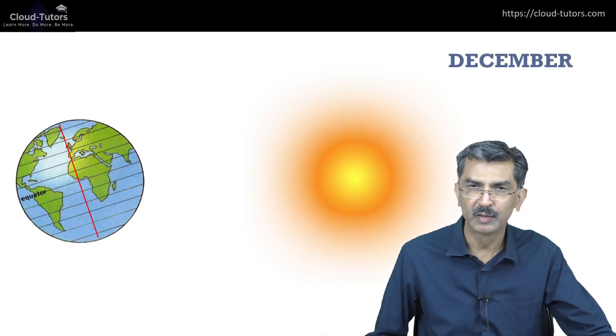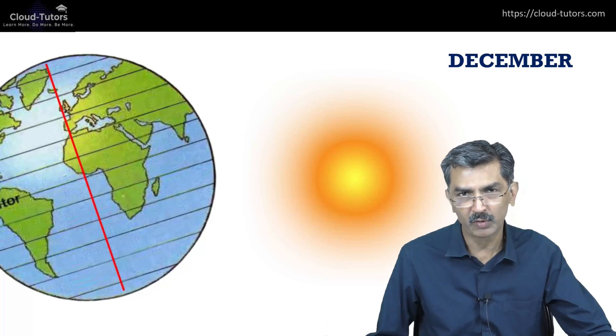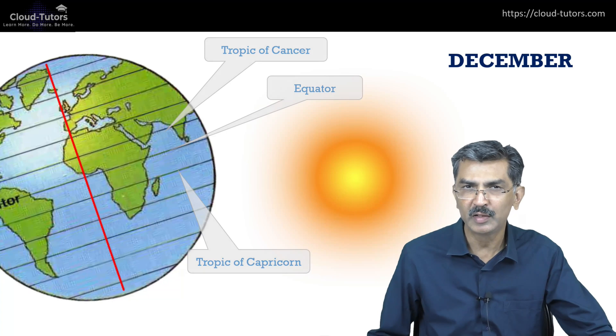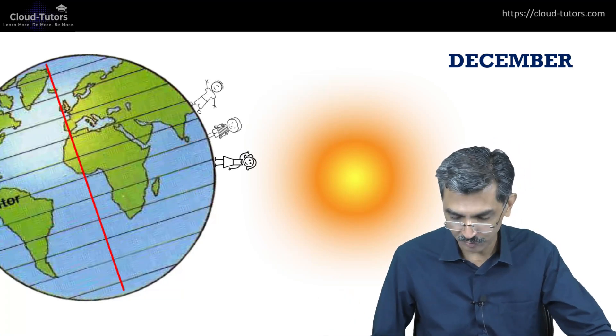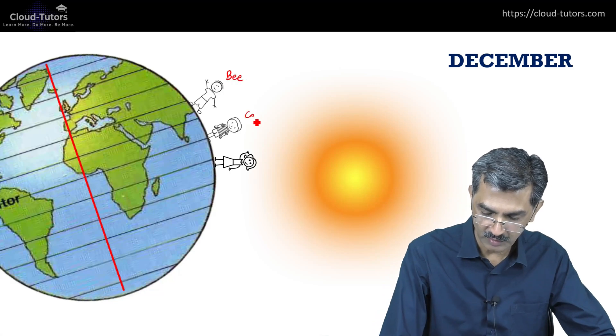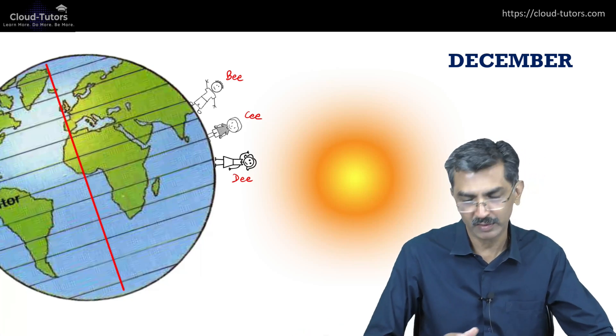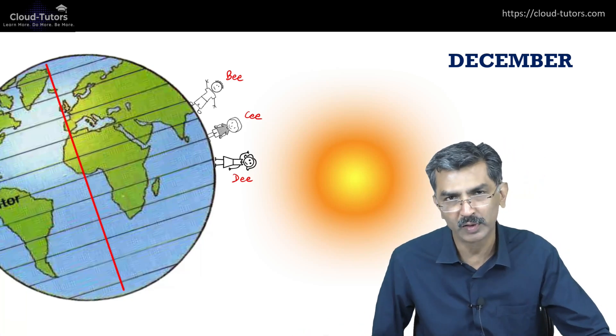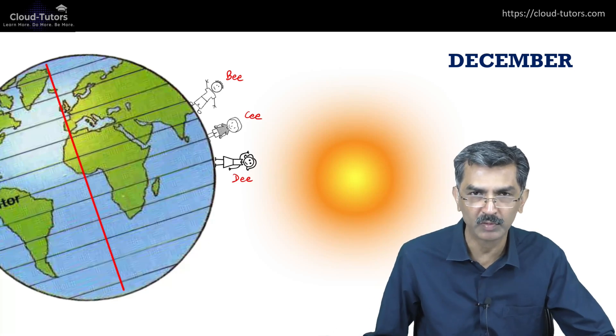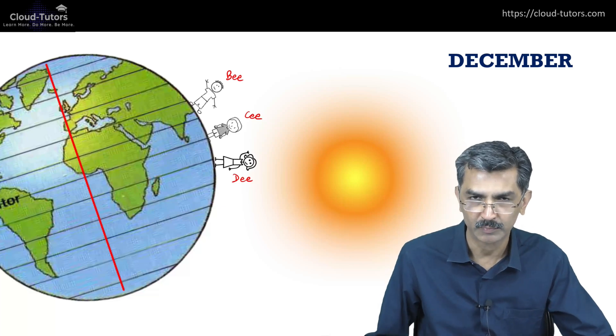The Earth continues its journey around the Sun, and in the month of December the Earth is on the other side of the Sun, having completed half an orbit. Let's zoom in again. Our three friends B, C, and D are at the same places. Which of them can say the Sun is directly overhead at 12 p.m.? It is D. In June the Sun was directly overhead B, and now in December it is directly overhead D.